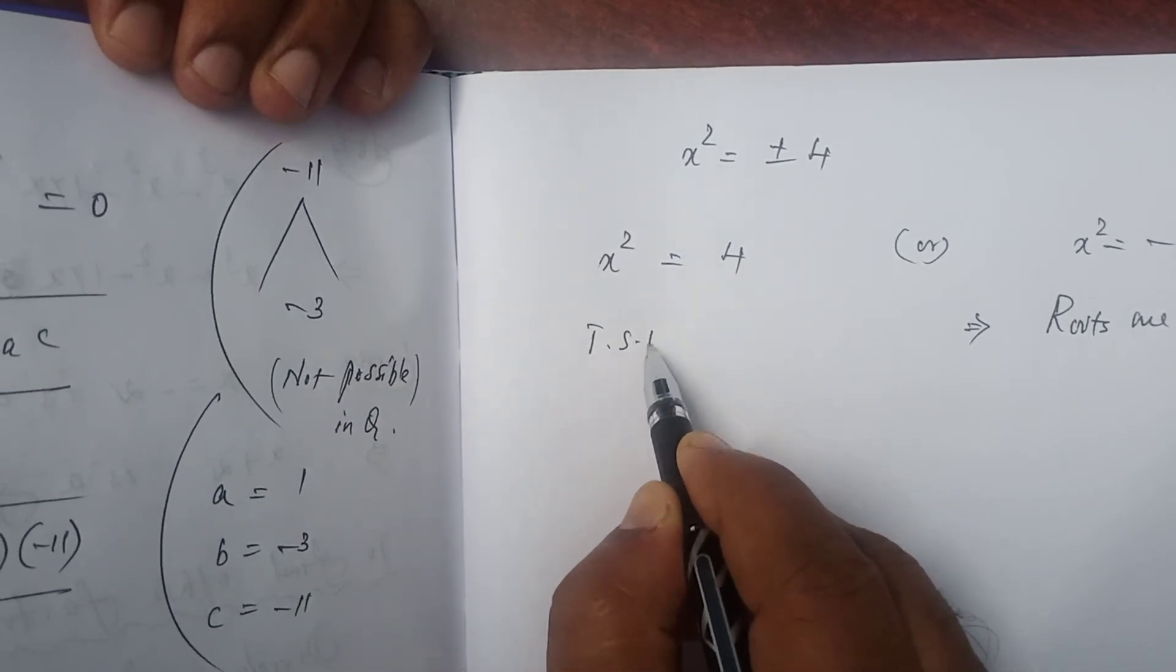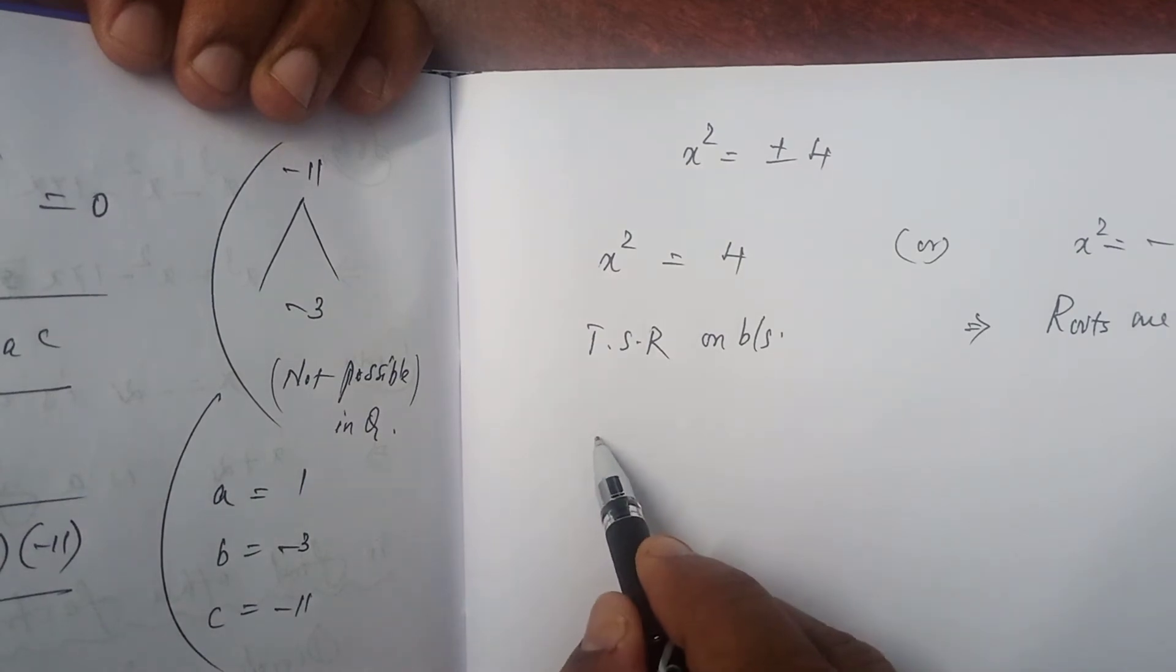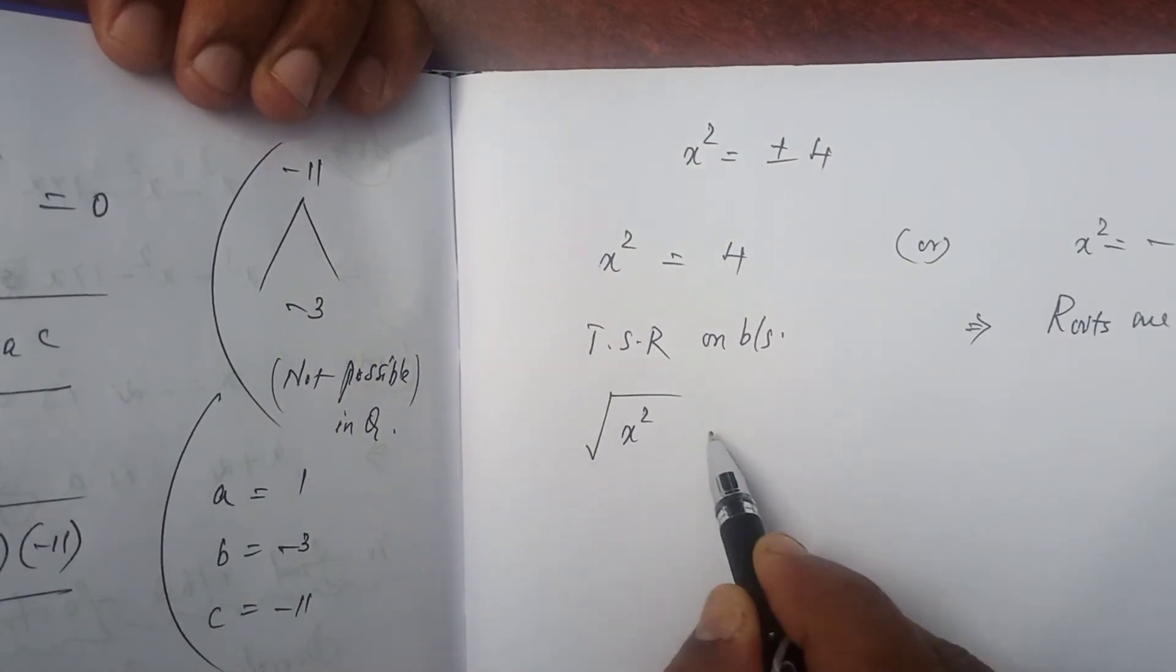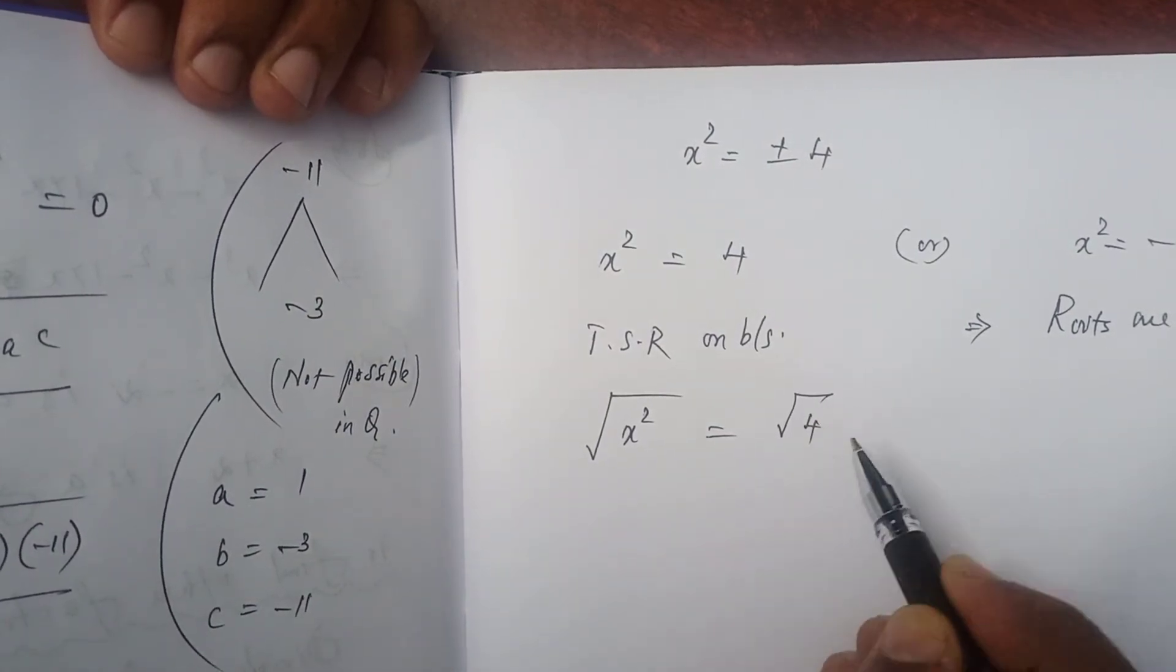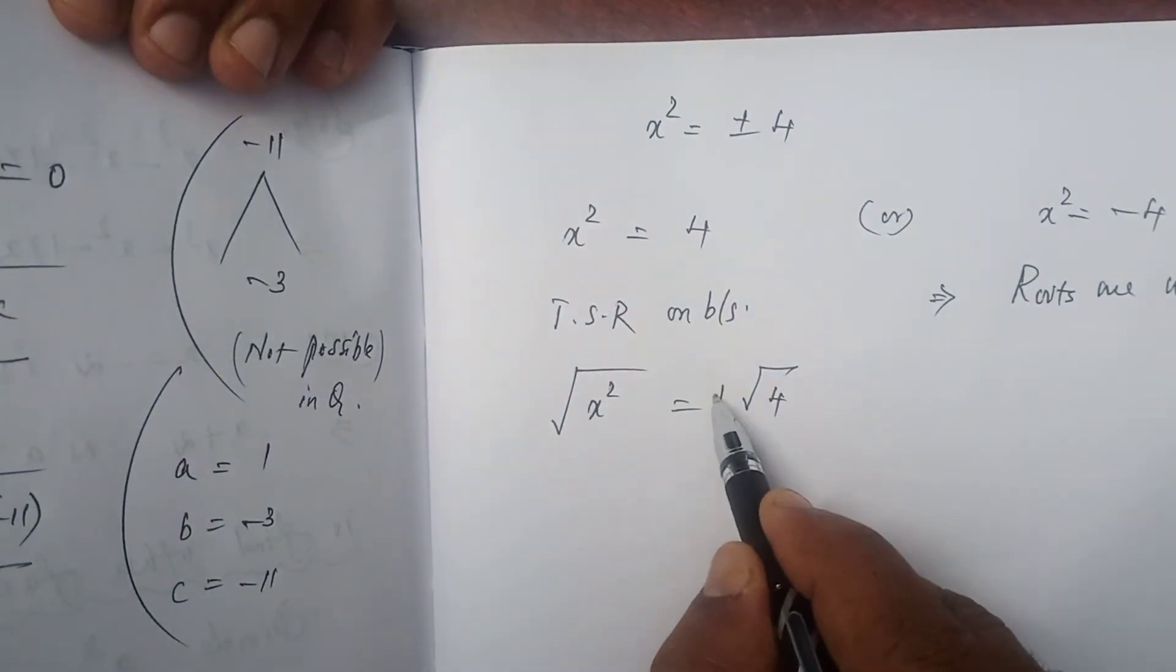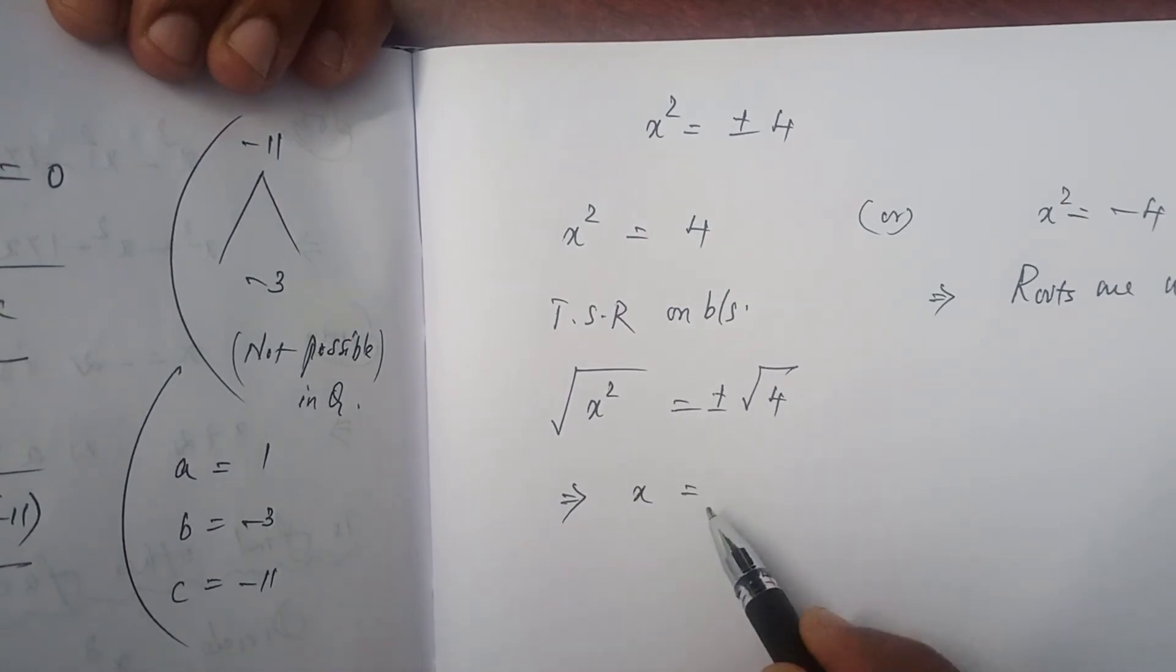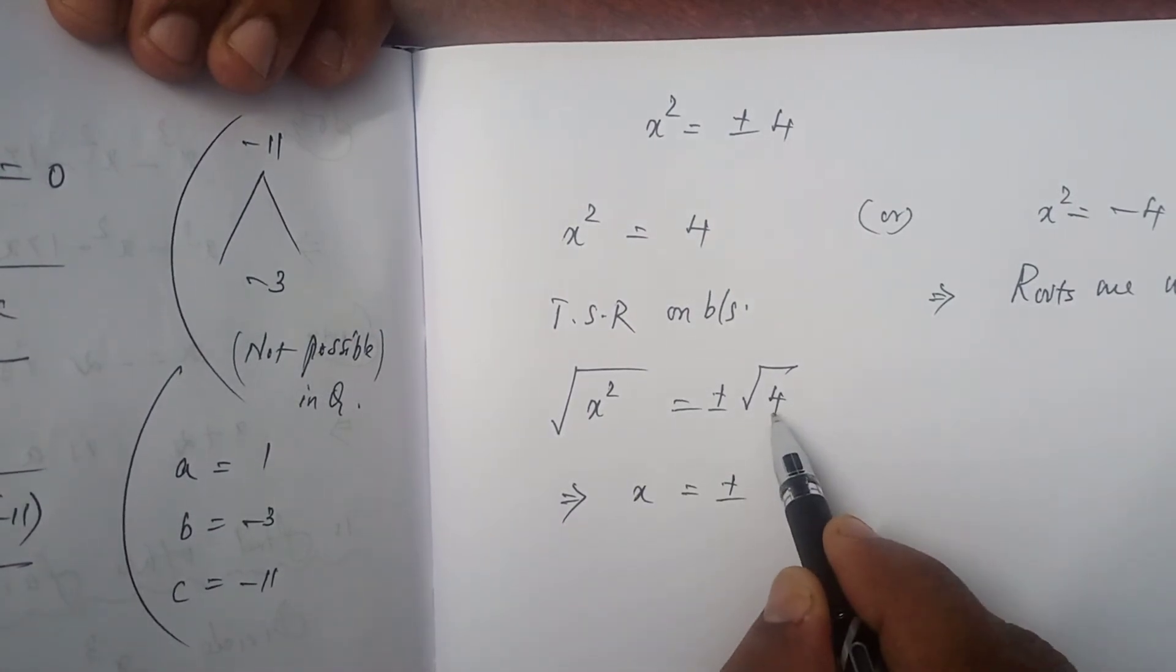Taking square root on both sides: √(x²) = √4. Since once again we have an even power, you have to introduce plus or minus. So x = ±√4.